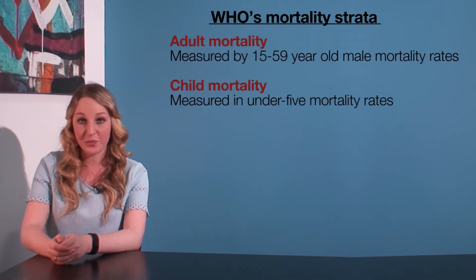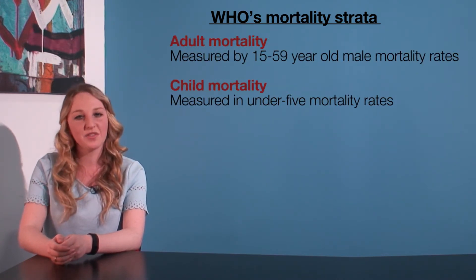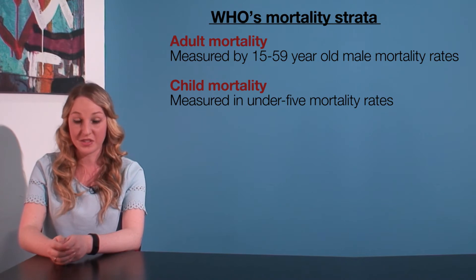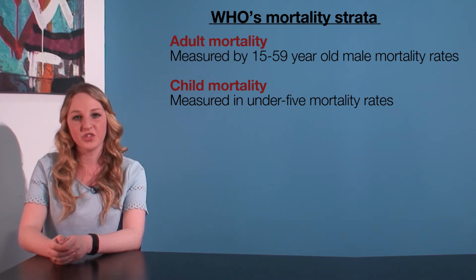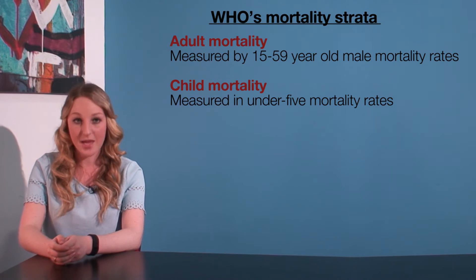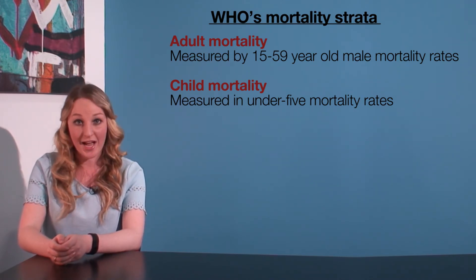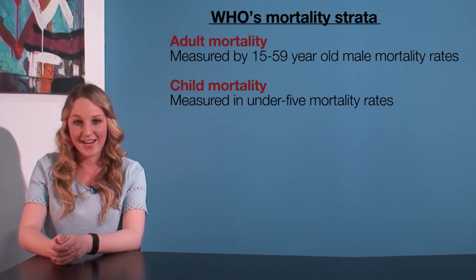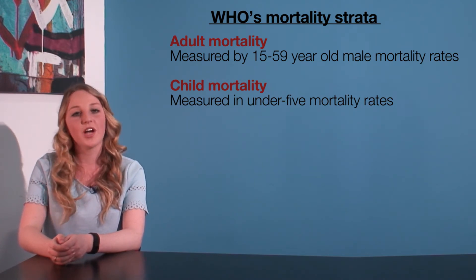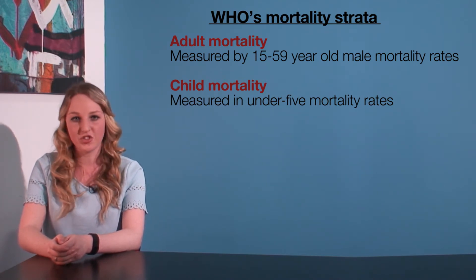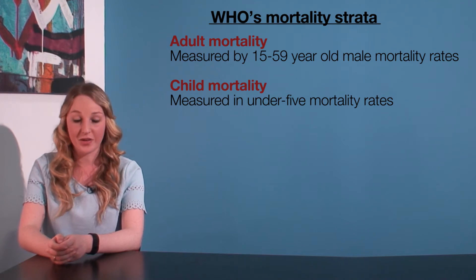These strata distinguish between adult mortality rates and child mortality rates. For the sake of this data, an adult is a male between 15 and 59, and a child is anyone under five years old. The mortality strata are labelled from stratum A through to stratum E. It is generally accepted that countries in stratum A are developed, whilst countries in stratum D and E are developing. Strata B and C are less clearly defined, but each mortality stratum has typical mortality characteristics.